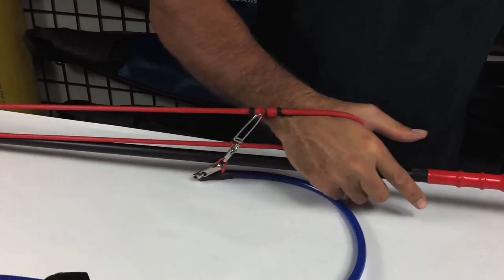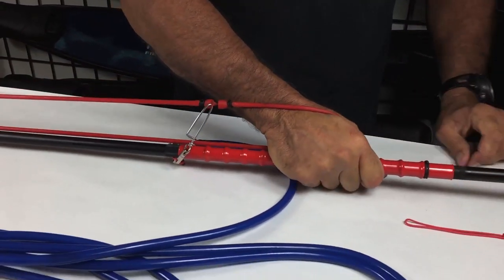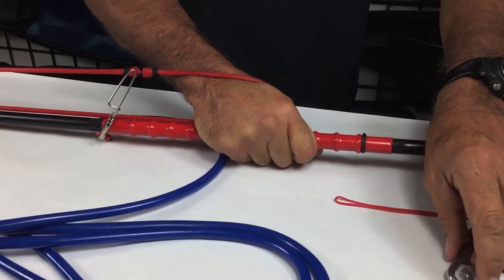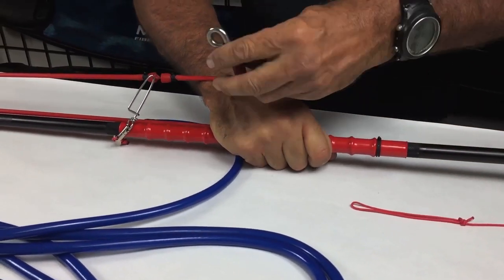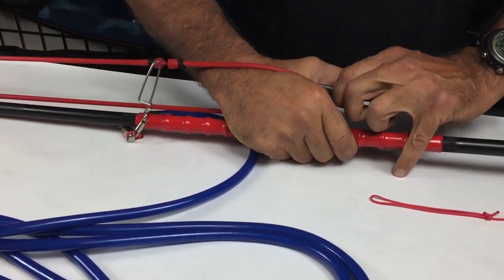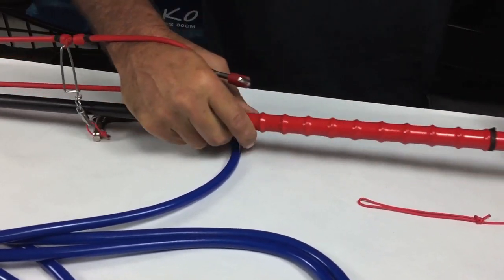The Pole Spear Float does not stop large running fish, but it will help you find your Pole Spear if it's dropped or if the fish holes up. Whether you have a regular band or a band made for a float line attachment, stretch the band to install your Pole Spear Resting Hook and slide it to the middle.